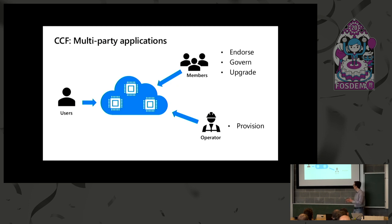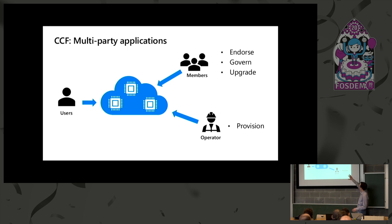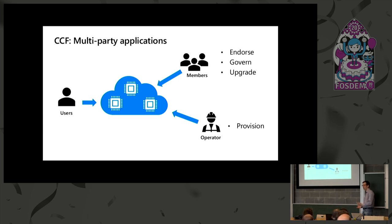From a high level, this is what a CCF application looks like. You have a number of machines running trusted execution environments or hardware enclaves, anywhere — in a cloud provider, multiple cloud providers, or on-premise. A bunch of users interact with that service, and a set of members provides governance. The members endorse the identity of the service, govern the membership sets, allow new members to join or leave, add and remove users, and look after upgrades — replacing code, improving the application, fixing security bugs.